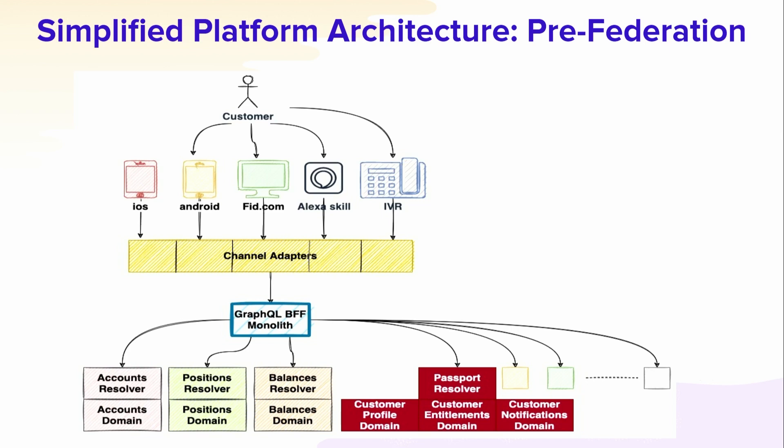The passport resolver depicted here in red was a little bit more interesting — we had sort of created a monolith within a monolith. This resolver integrated across three domains: customer profile, customer entitlements, and customer notifications. We thought carving out this piece, which is essentially a monolith resolver in itself, and using it to convert to federation would help us understand how we could do this at a much grander scale.